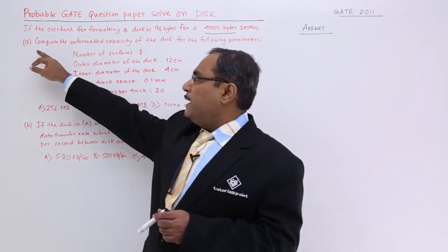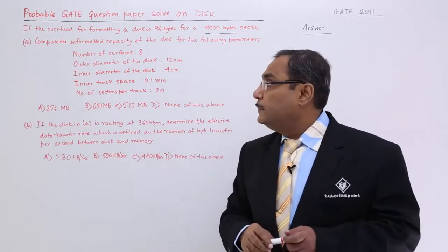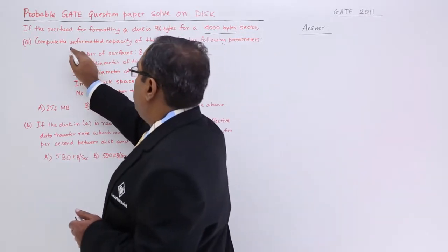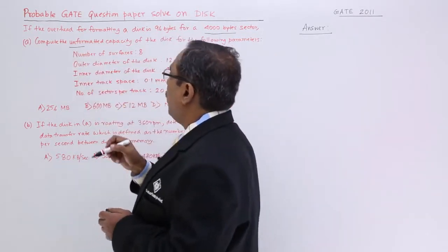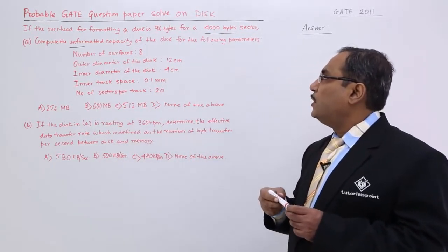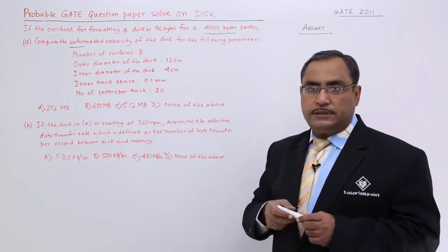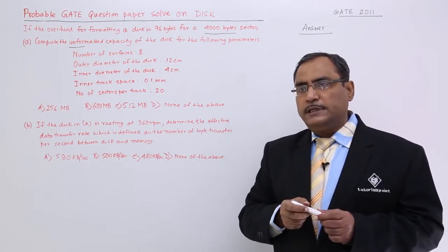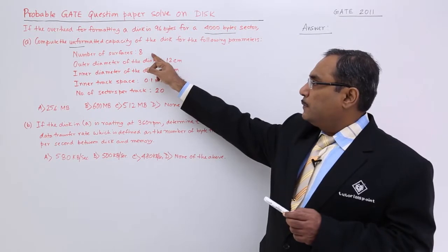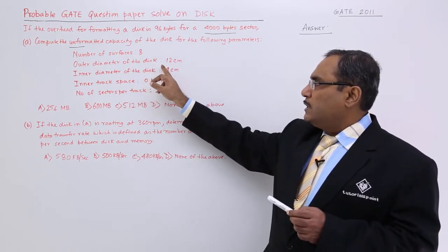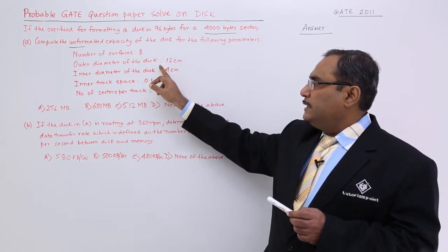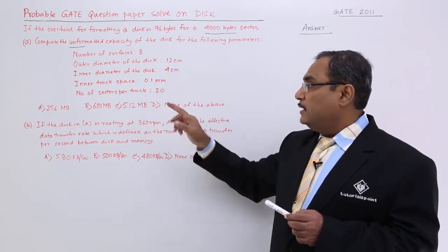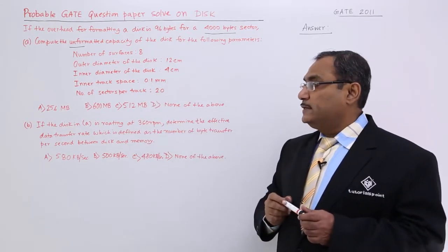This problem has two parts, A and B. Part A asks us to compute the unformatted capacity of the disk for the following parameters: number of surfaces, outer diameter of the disk, inner diameter of the disk, inter-track space, and number of sectors per track.